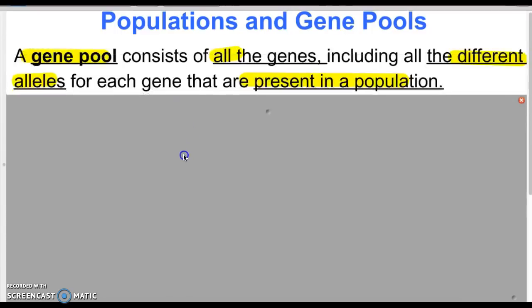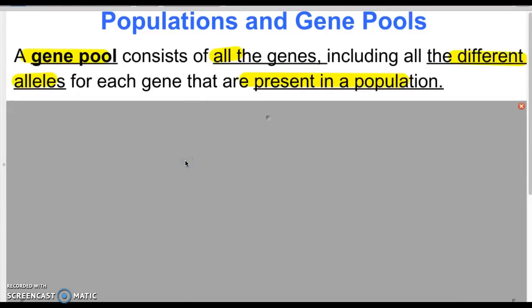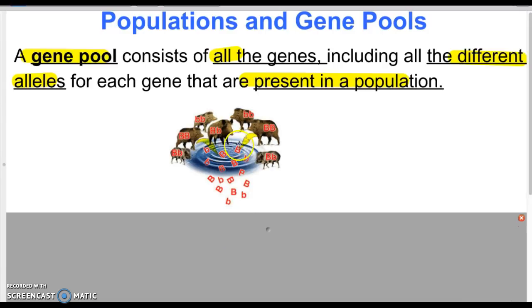Now let's talk about populations and gene pools in regards to evolution. A gene pool consists of all the genes and all the different alleles present in the population — not just one individual's genes, but all genes that exist in the whole population. Here's an example looking at big bees and little bees, showing how many of each are present in the population.